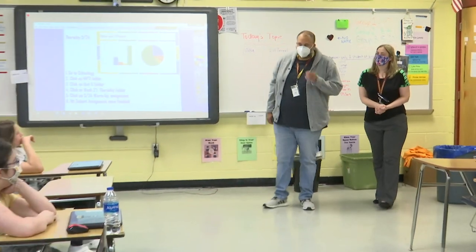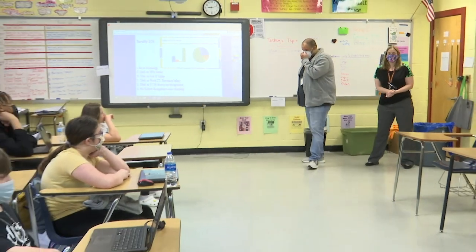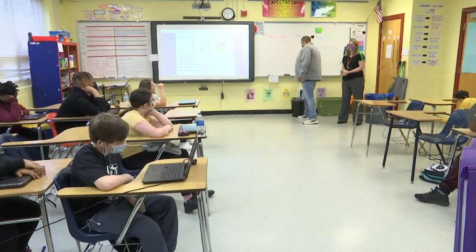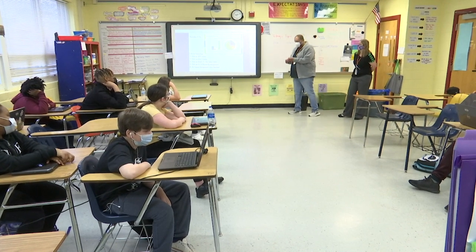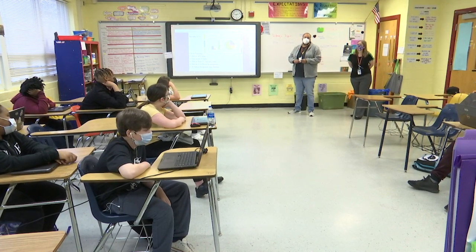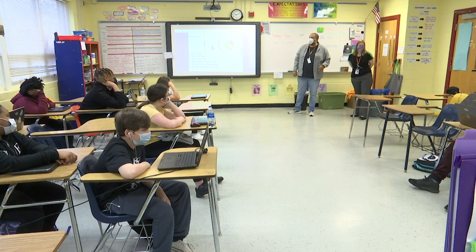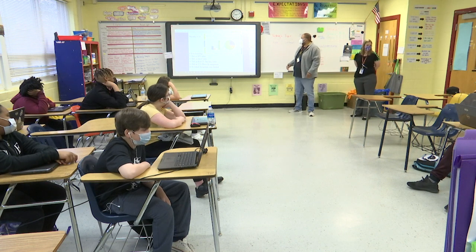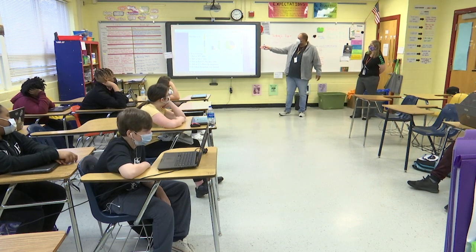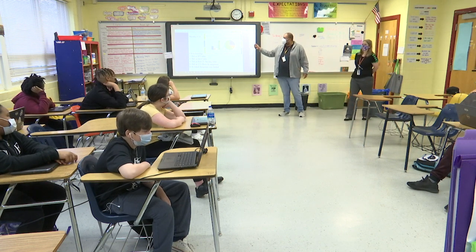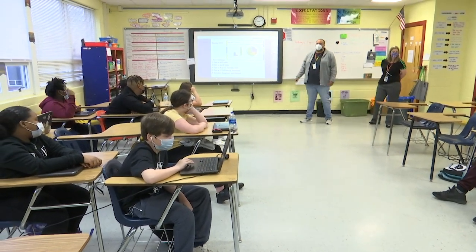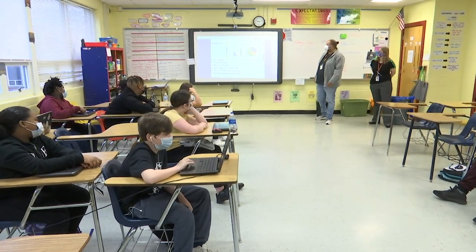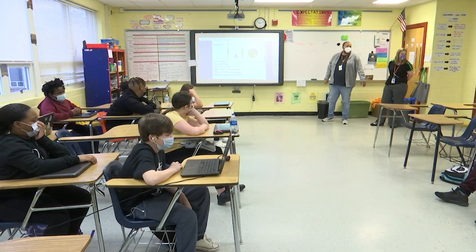All right, ready guys? So today we're looking at how these graphs are alike and different. We've been working on graphs for a few days now, so we should all be familiar with these. What type of graph is the first one? A circle graph. And the one to your left is a bar graph.